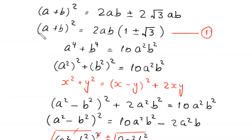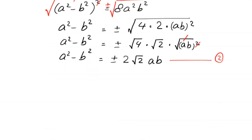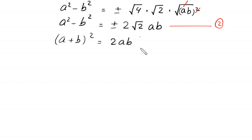Equation 1 is: (a plus b) whole squared equals 2 times ab times (1 plus or minus root 3).